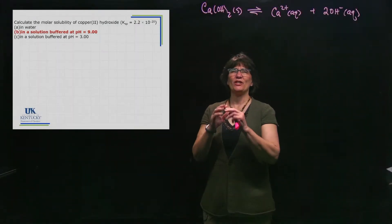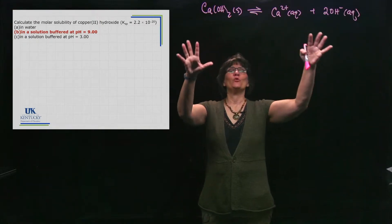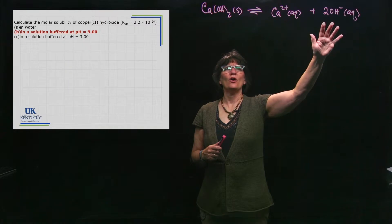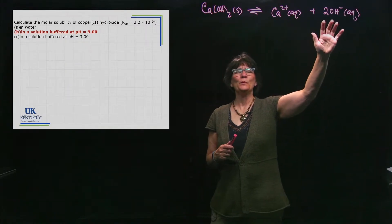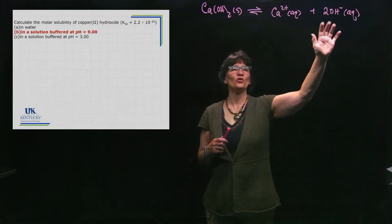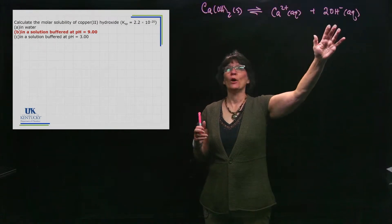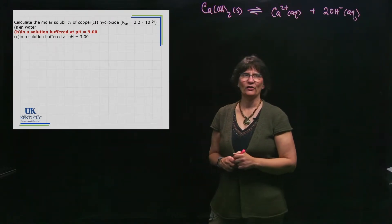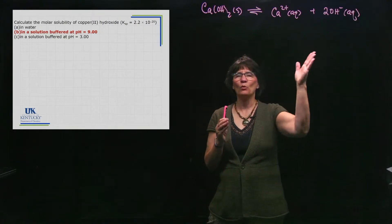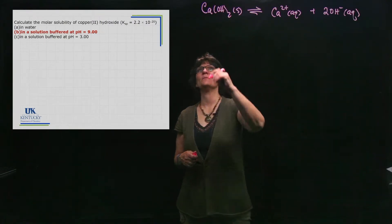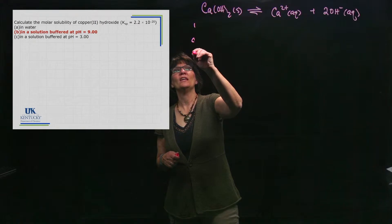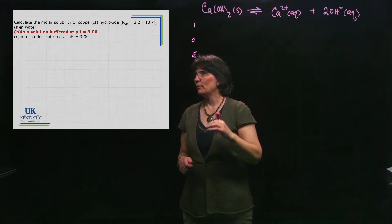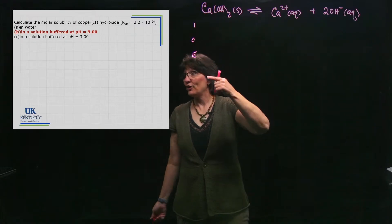In part A, I showed you that you can't just blindly put values in — you need to consider what you're doing. We saw that got really complicated when we couldn't assume that a term was one or zero. Now we're going to do a problem where we're buffering it, so we're told exactly what the OH⁻ concentration has to be. We're going to do an ICE table once again because this is an equilibrium problem.